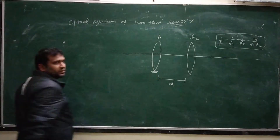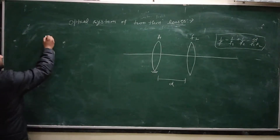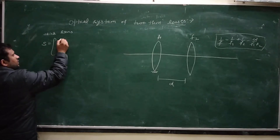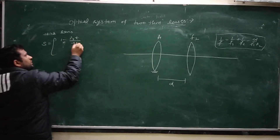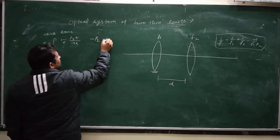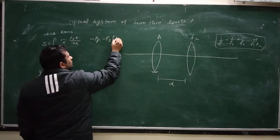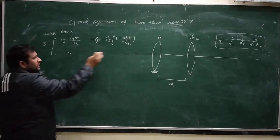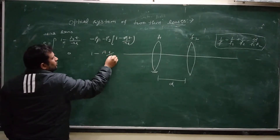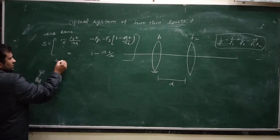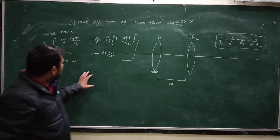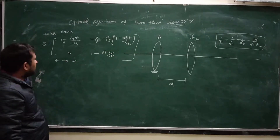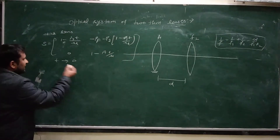We need to know the system matrix for the thin lens. For a thick lens, the system matrix is: [1 − p2·t/μ, t/μ; −(p1 + p2 − p2·p1·t/μ), 1 − p1·t/μ]. For a thin lens, the thickness t reduces to 0, as we have done in previous lectures.